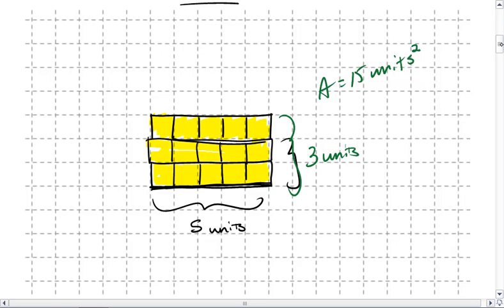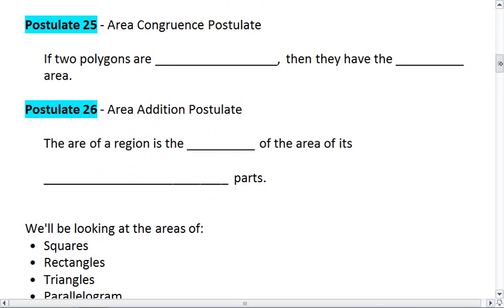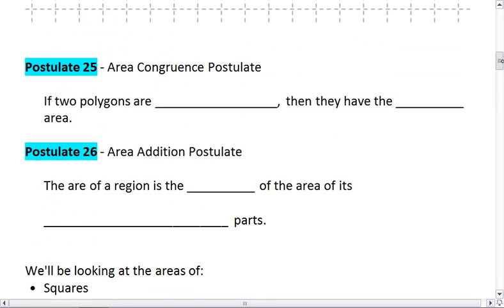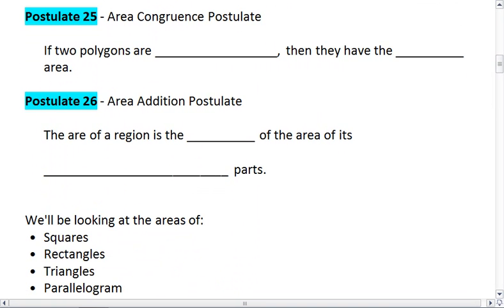Well, this brings us to some important postulates first, and then we're going to look at the specific formulas for shapes. Postulate 25 is the area congruence postulate, which tells us that if two polygons are congruent, then they have the same area.